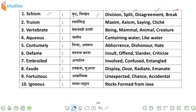तो चलिए शुरू करते हैं. यहाँ पर 4 options as synonyms निकल के सामने आते हैं. वही second word है, truism, जिसकी meaning होती है स्वयम सिद्ध. इसके synonyms हैं: maxim, axiom, saying, और cliché. यह आपके लिए 4 synonyms निकल के आते हैं truism के लिए.